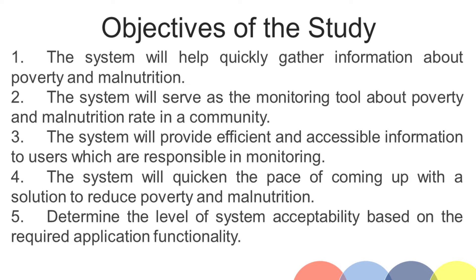Its specific objectives are the following: 1. The system will help quickly gather information about poverty and malnutrition. 2. The system will serve as the monitoring tool for poverty and malnutrition rate in a community. 3. The system will provide efficient and accessible information to users who are responsible for monitoring. 4. The system will quicken the pace of coming up with a solution to reduce poverty and malnutrition.